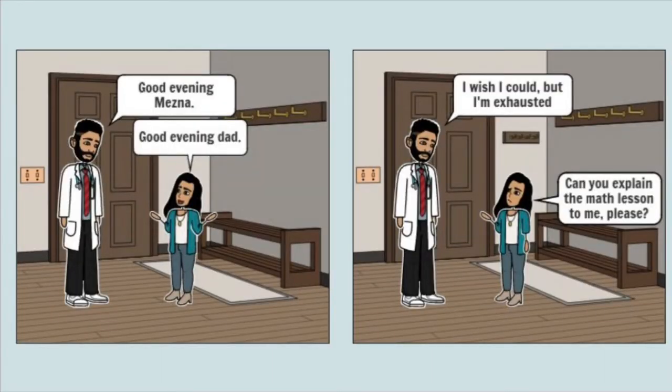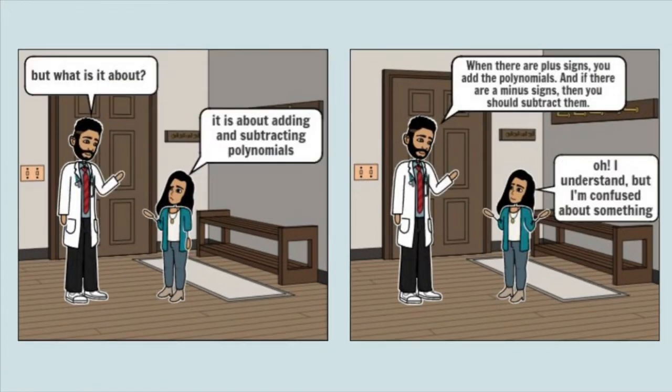Mizna saw her dad and said, 'Good evening, dad.' Her dad replied, 'Good evening, Mizna.' Mizna asked her dad, 'Can you explain the math lesson to me please?' Her dad replied, 'I wish I could, but I'm exhausted.' Her father asked, 'But what is it about?' She replied, 'It's about adding and subtracting polynomials.'